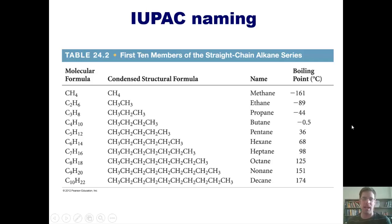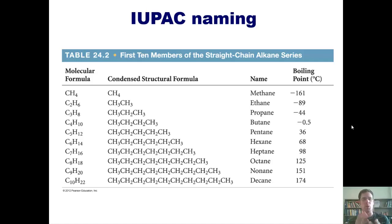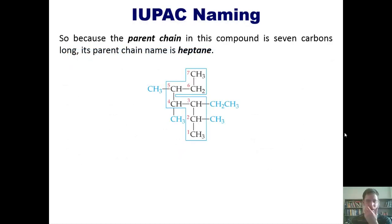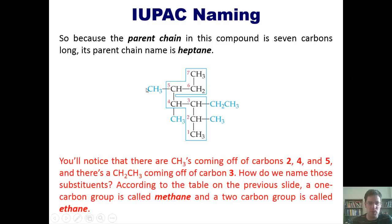Those are the names. Now for my students who are actually taking this class, I require you to memorize these names and the number of carbons that they correspond to. So, because the parent chain in this compound is seven carbons long, its parent chain name is heptane — that's the chain name for seven carbons. You'll notice that there are CH3 groups coming off of carbons 2, 4, and 5, and also a CH2CH3 coming off of carbon 3.